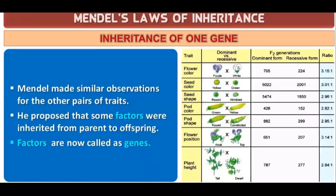In the last class we talked about Mendel's Law of Inheritance. We saw that Mendel made similar observations from other pairs of traits. He proposed that some factors were inherited from parent to offspring, and these factors are now called genes. This was all about the topic: Inheritance of One Gene.